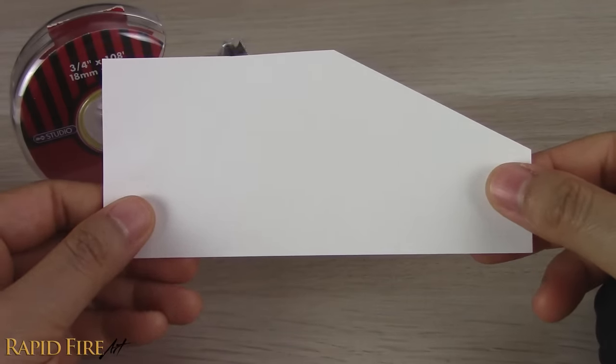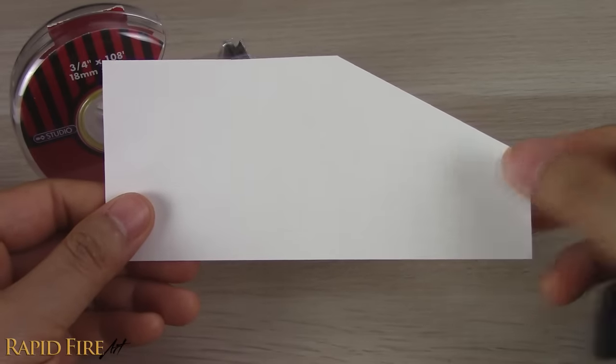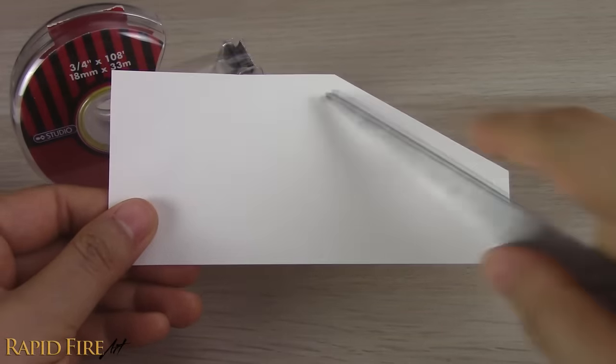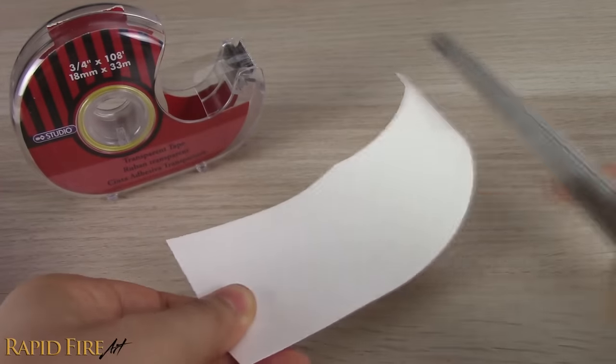Next, all we have to do is roll it as tightly as we can straight to the other side. To assist with that, put the paper between your scissors and finger, and pull it through several times until it curls up.